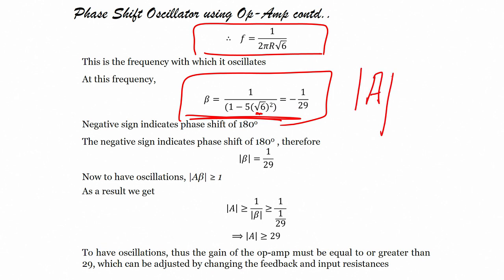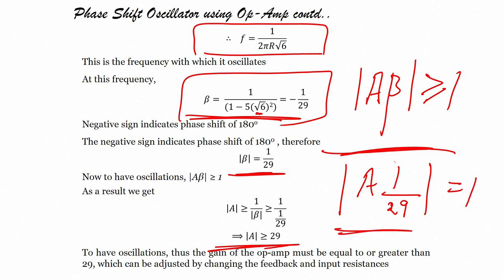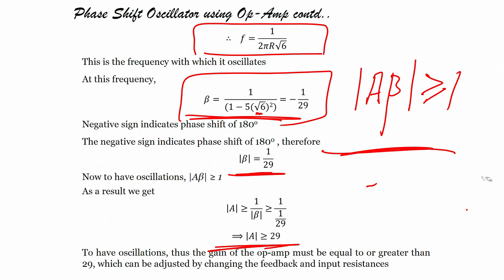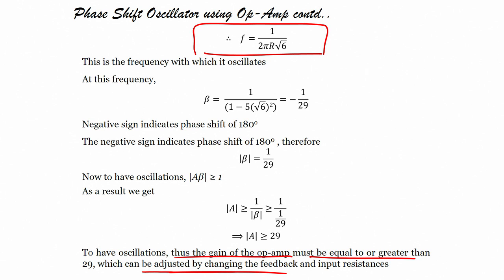The Barkhausen criteria requires A·β = 1. Since |β| = 1/29, the gain A must be greater than or equal to 29. Therefore, to have oscillations, the gain of the op-amp must be equal to or greater than 29, which can be adjusted by changing the feedback resistor R_F and the input resistor R_I.